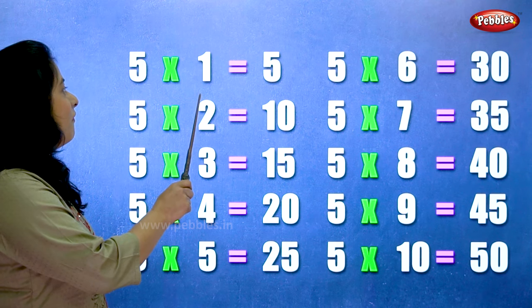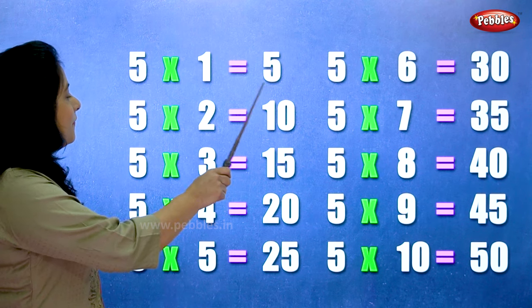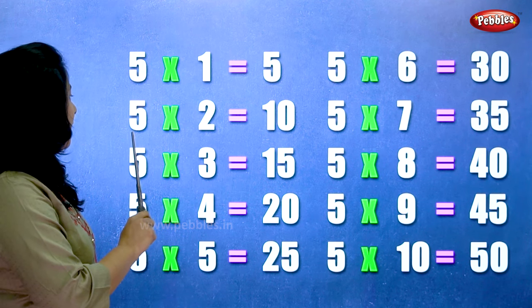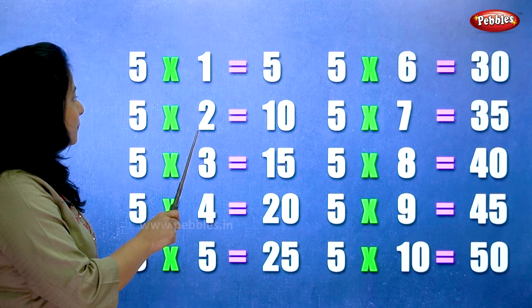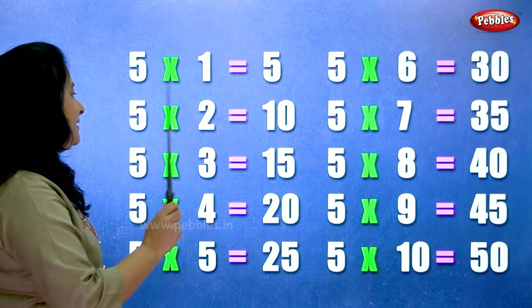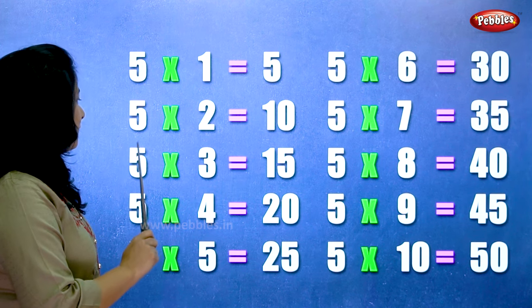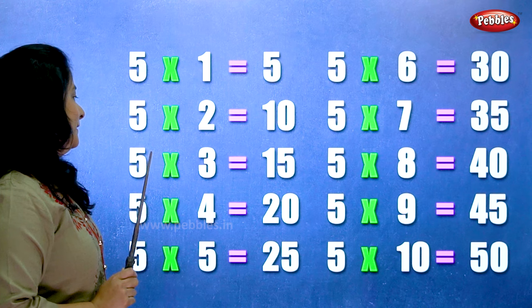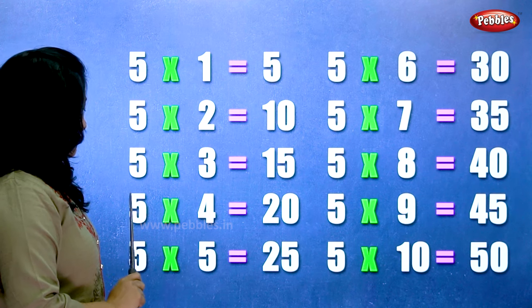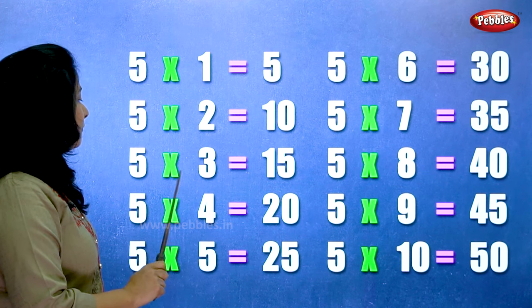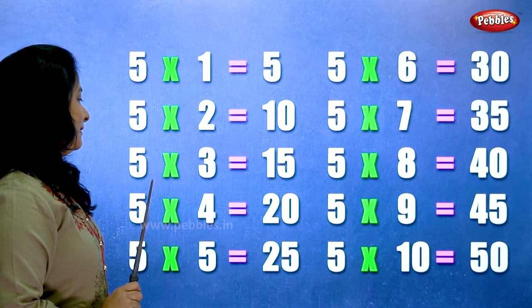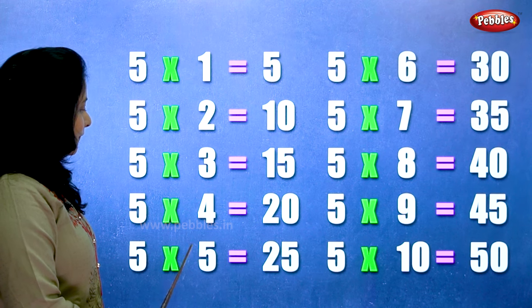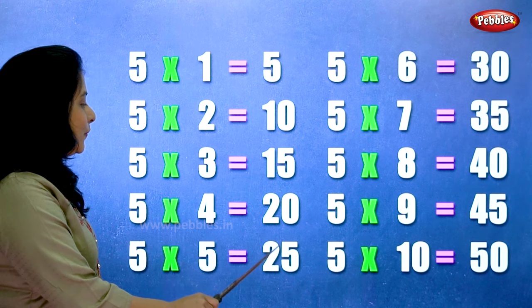5 ones are 5, 5 twos are 10, 5 threes are 15, 5 fours are 20, 5 fives are 25.